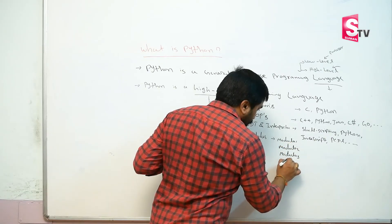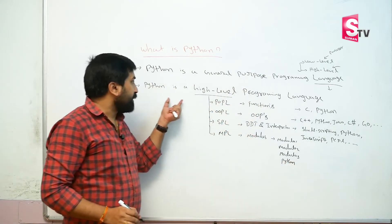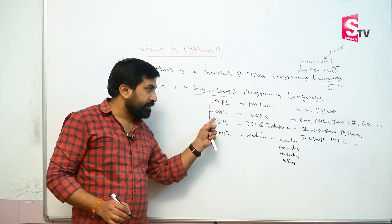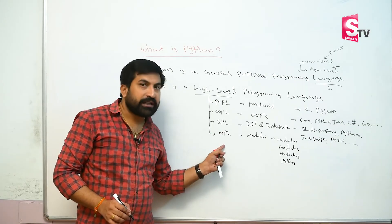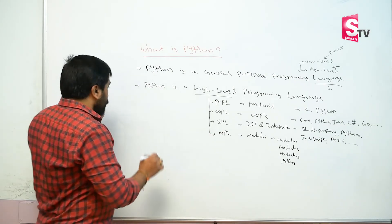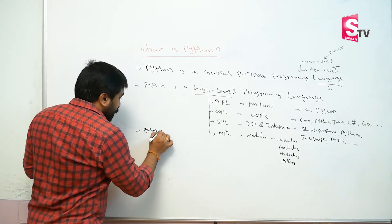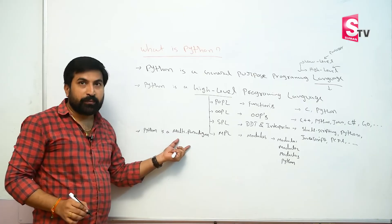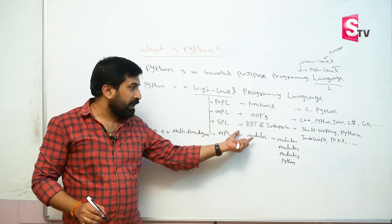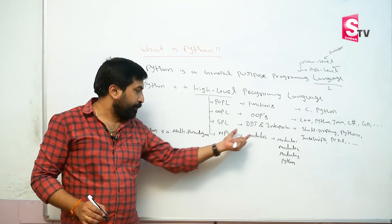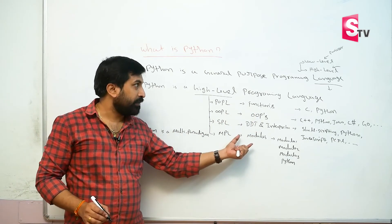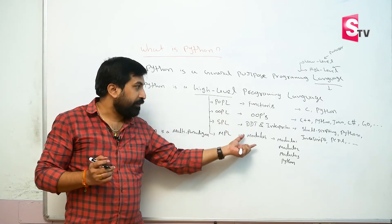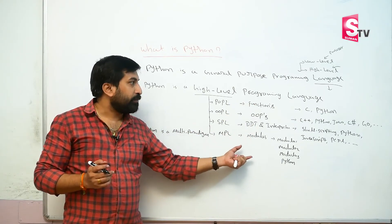Python is one high-level programming language. But which type of high-level? Python is procedure-oriented, Python is object-oriented, Python is scripting, and Python is a modular programming language. So we are simply calling Python as a multi-paradigm language. That is the only one reason we can develop any type of application using Python.